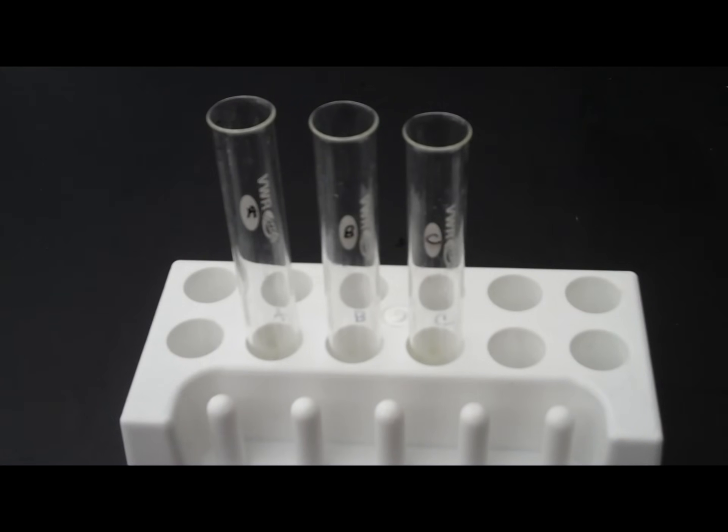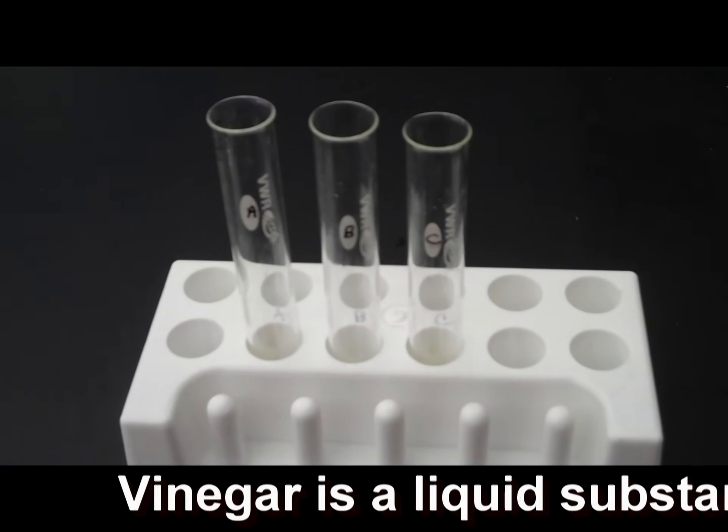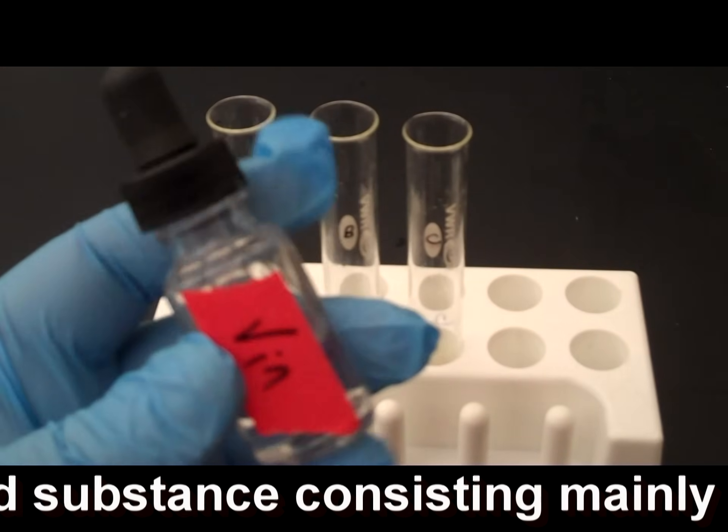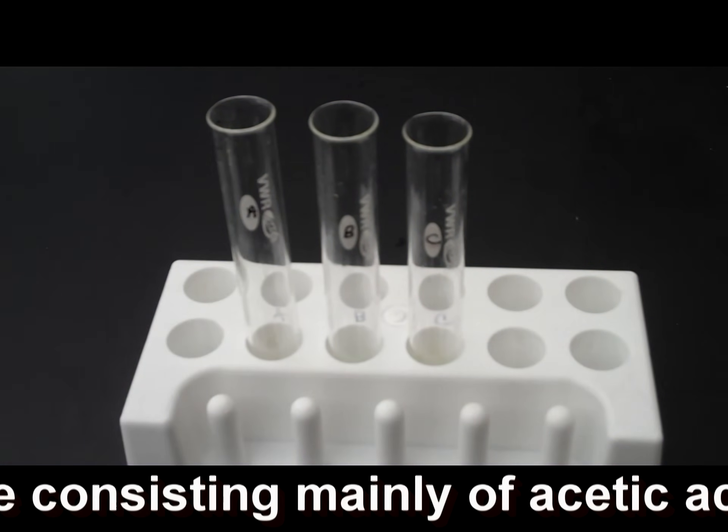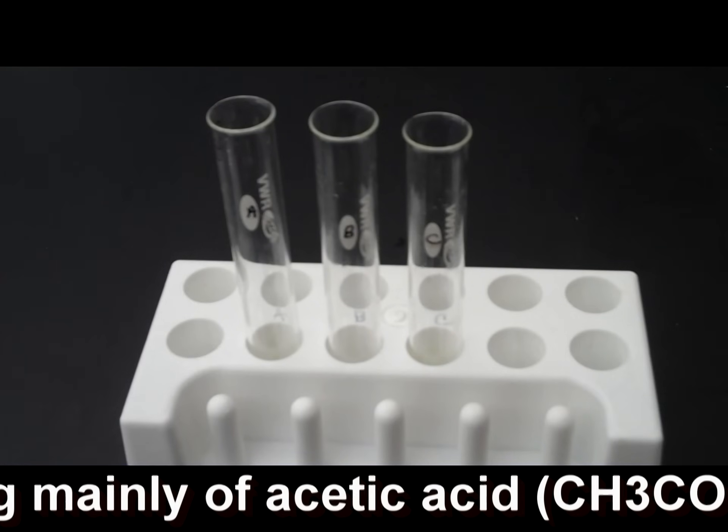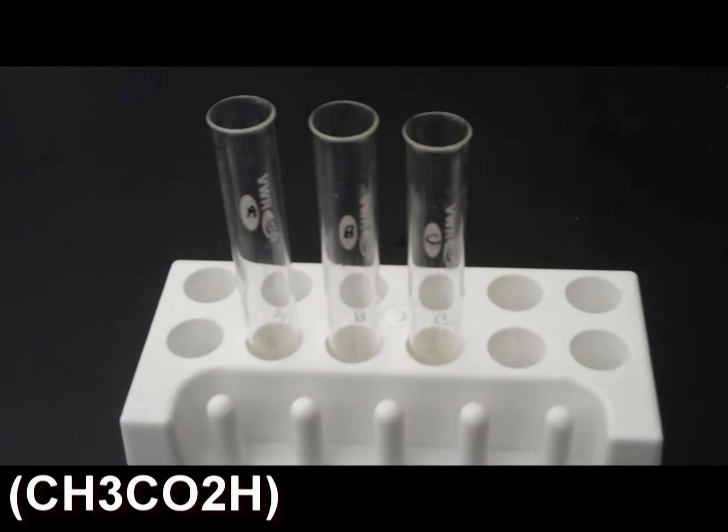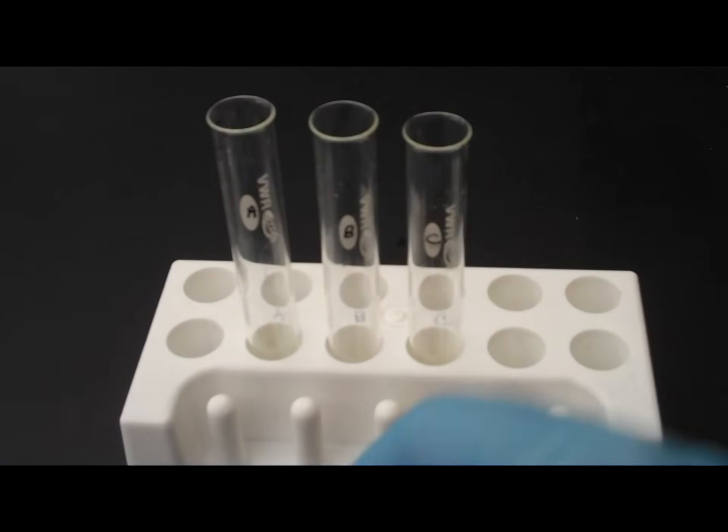The next thing we're going to add is vinegar to test tube A. Vinegar, if you remember, is a weak acid. So, we're going to see if acid affects enzyme activity. And I'm going to put two dropper fools of vinegar into test tube A. I'm going to set my vinegar to the side because we're through with that.